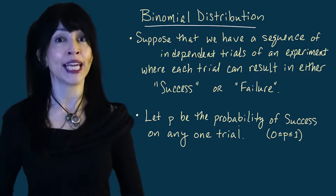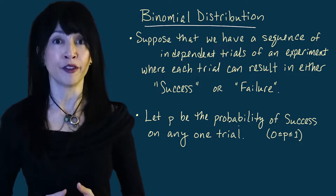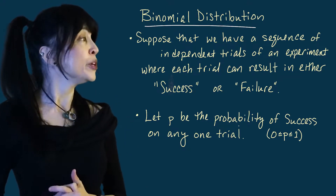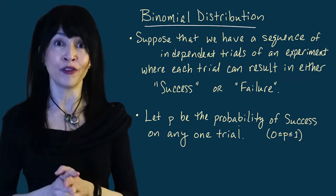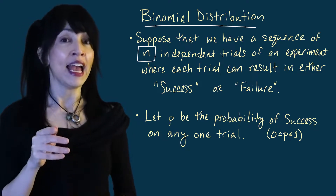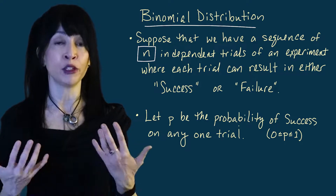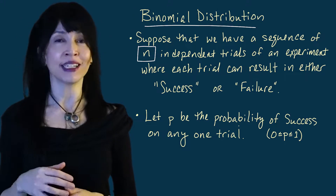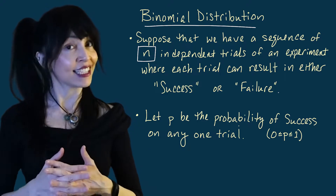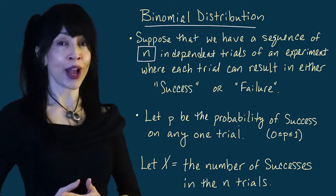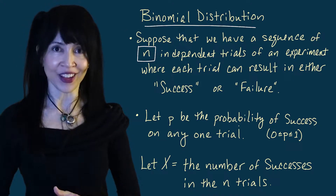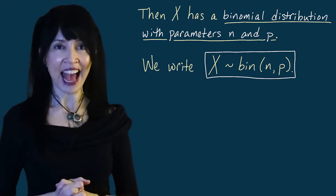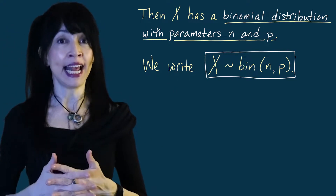Now, before with the geometric random variable, we counted the number of trials up to and including the first success. We also looked at it a different way and counted the number of failures before the first success. For the binomial distribution, we're actually going to fix the number of trials — exactly n trials — where n is fixed and another parameter of this model. I'm going to let our random variable X count the number of successes in n trials. Then X is said to have a binomial distribution, written X ~ Bin(n, p).